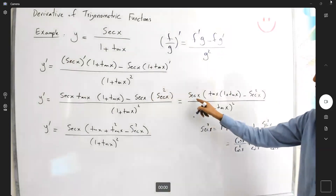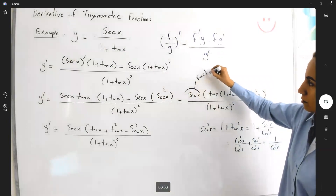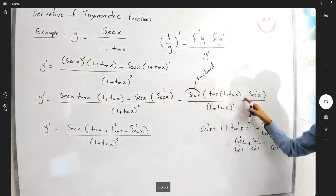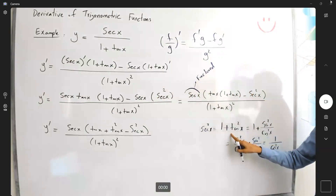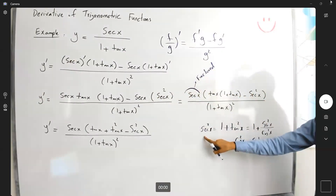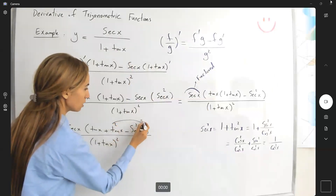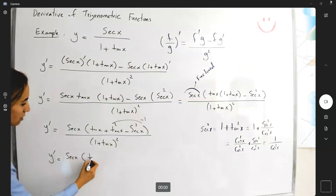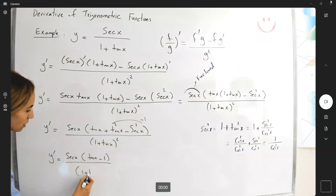The reason we factored out secant of x was to create tangent squared and secant squared adjacent with subtraction. Since secant squared minus tangent squared equals 1, then tangent squared minus secant squared equals negative 1. That term becomes negative 1, and the final derivative is secant of x times the quantity tangent of x minus 1, divided by 1 plus tangent of x to the second power.